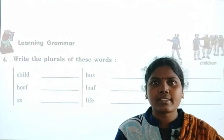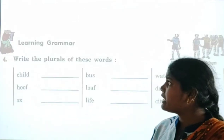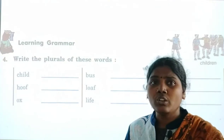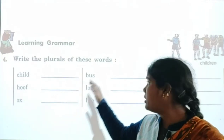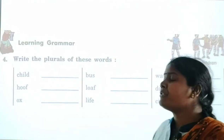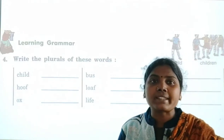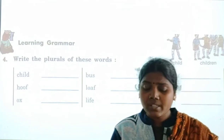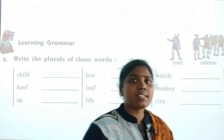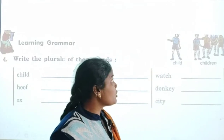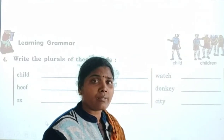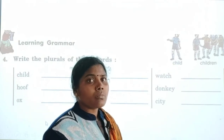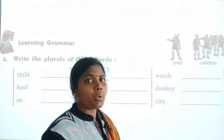Let's go to the exercise. So in learning grammar, we write the plural of these words. Here we have a singular form of words, and we are going to write the plural form. First I will explain what is singular and plural. Singular means only one — one pencil, one book, one child, one classroom.